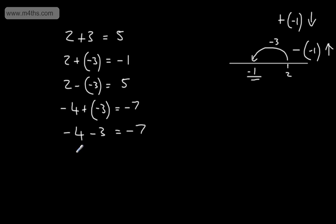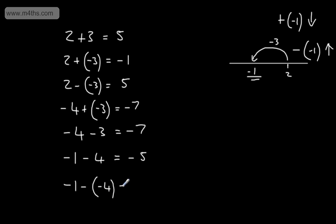If I had negative 1 minus 4, we end up with negative 5. But if I had negative 1 and I subtracted negative 4, we're going to end up adding it. We start at negative 1 on the number line, add the 4, and end up at 3. So: if you're adding a negative number it will decrease the value; if you're subtracting a negative number it will increase the value.